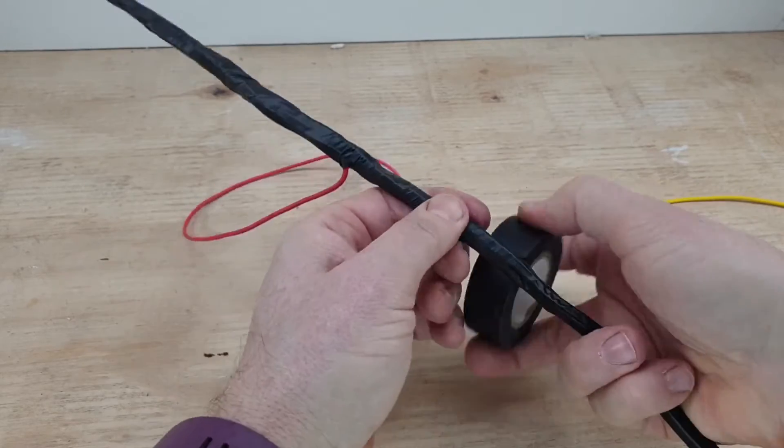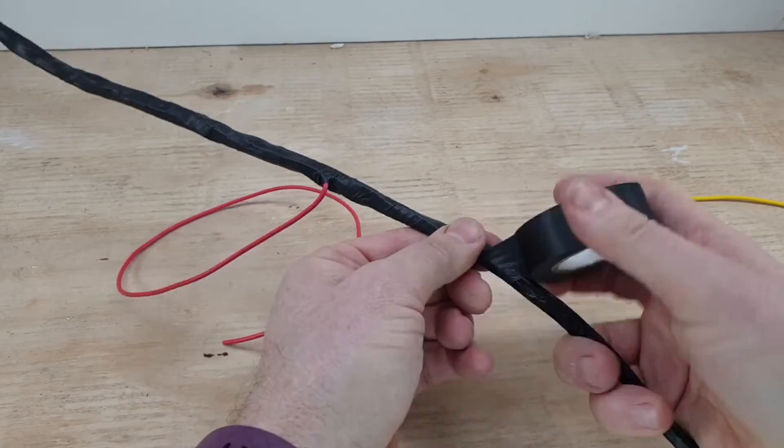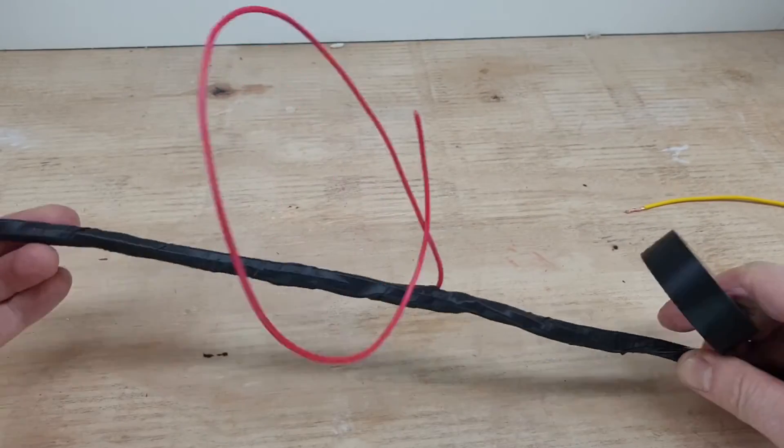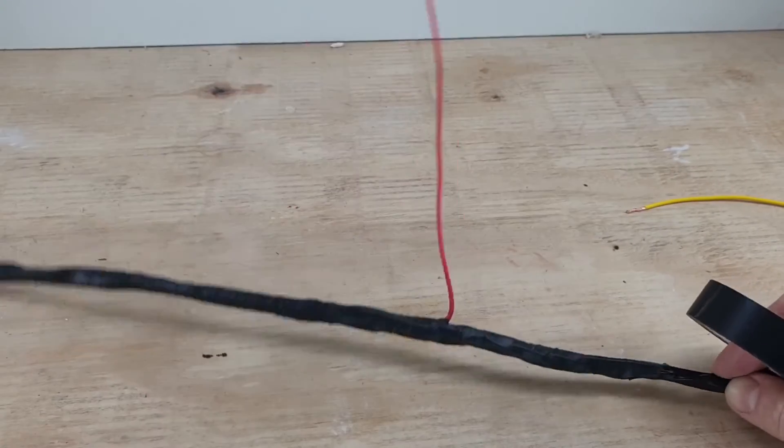About there. Maybe an inch past it, a couple of inches. And then snap that tape off. Now that loom's back to how it was, more or less where we started.